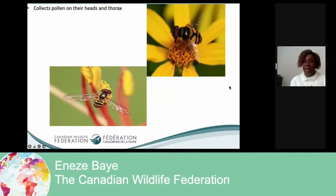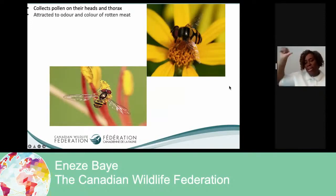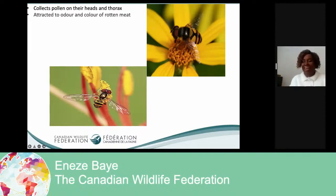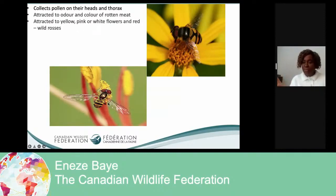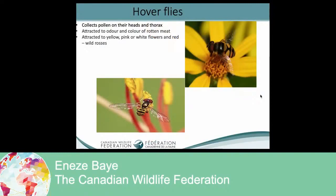Moving on to the next pollinator — flies. Do you think flies are cool? Give me a thumbs up or thumbs down. So flies collect food differently — they love collecting food on their heads. They are attracted to odor and smell like rotten meat. So if you put something very stinky around, you can see flies coming around to take some nutrients from it. And they like white or pink flowers.